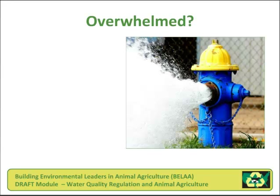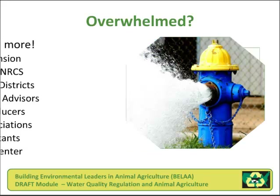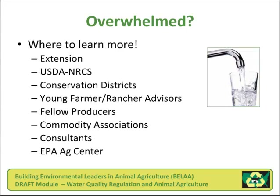There are many sources of information to help producers as well as extension and agricultural educators. Seek information on these issues from Cooperative Extension, the USDA Natural Resources Conservation Service, your local conservation districts, young farmer and rancher advisors, fellow producers, commodity associations, consultants that work with environmental management of animal agriculture, and the EPA's AgCenter, which is an online educational resource.